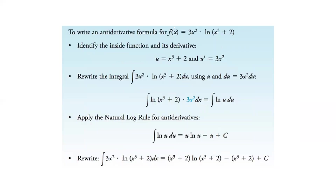Here we have 3x squared and ln of x cubed plus 2. With ln or trig functions, the inside piece is usually going to be our u. So if u equals x cubed plus 2, the derivative is 3x squared — which is right here. So that's u and that's du. We rewrite this as the integral of ln(u) du, and the antiderivative of ln(u) is u ln(u) minus u plus c. Then we replace all three u's with x cubed plus 2, giving us (x³+2)ln(x³+2) minus (x³+2) plus c.